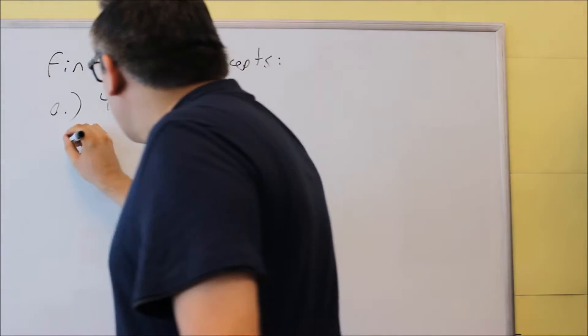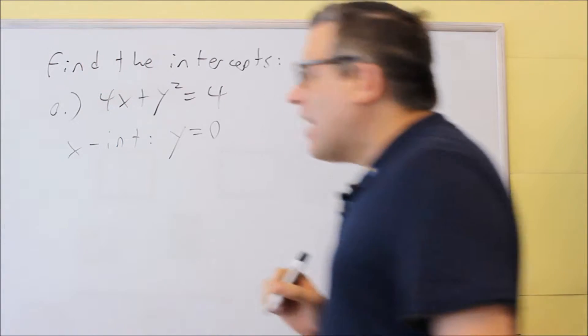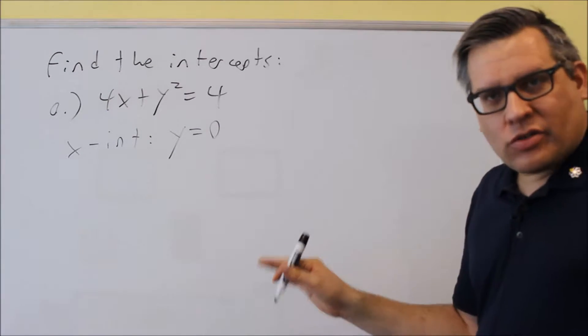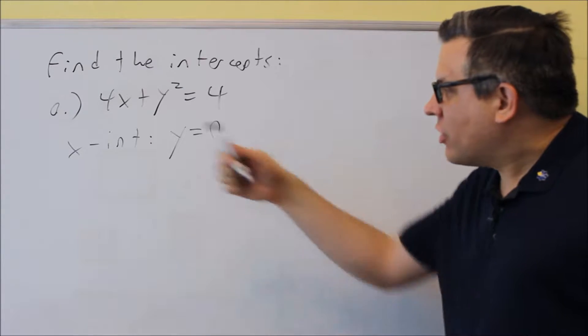Now remember with intercepts, there's a rule that we have to follow for that. So when you want to find the x-intercept, you're going to put in a 0 for y. Always. Doesn't matter what the equation is, we always do the same process. So let's do that for this one.